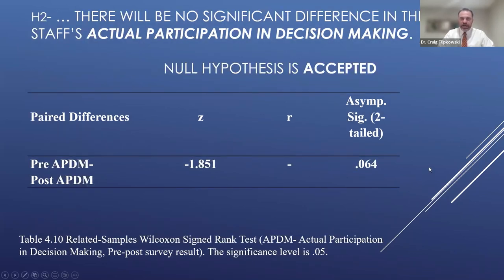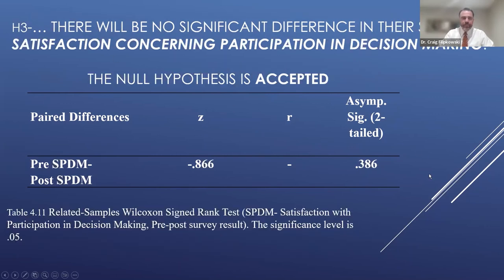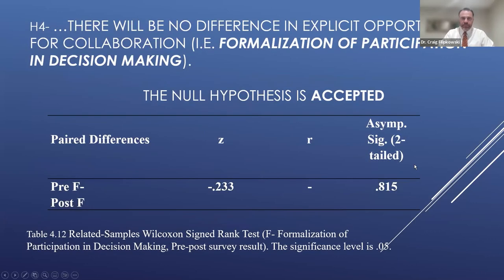For the second null hypothesis, we found that it was accepted, with a significance of 0.064 — indicating a lack of significance in actual participation in decision making. Third, when looking at satisfaction concerning participation in decision making, the null hypothesis was again accepted, with significance at 0.386. Finally, we see a p score of 0.815 when looking at formalization of participation in decision making — so there was no statistically significant difference from pre to post test for this final hypothesis.